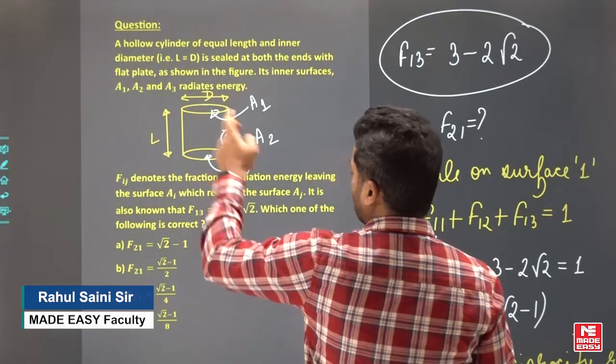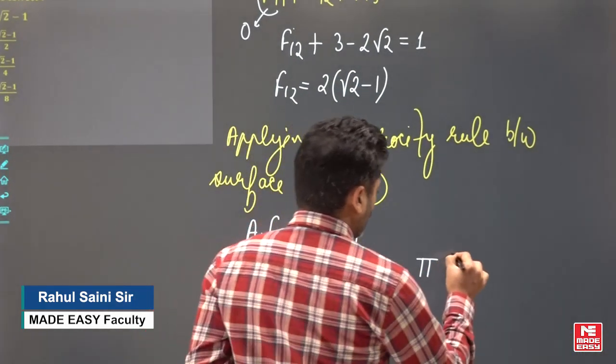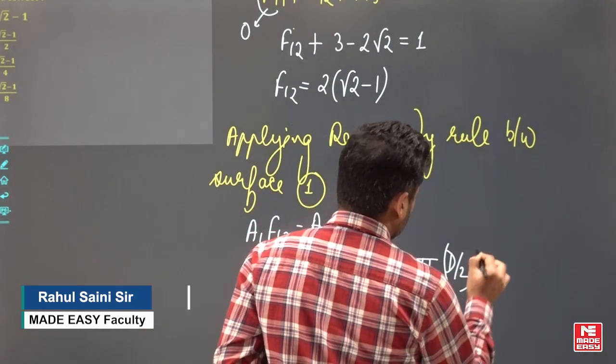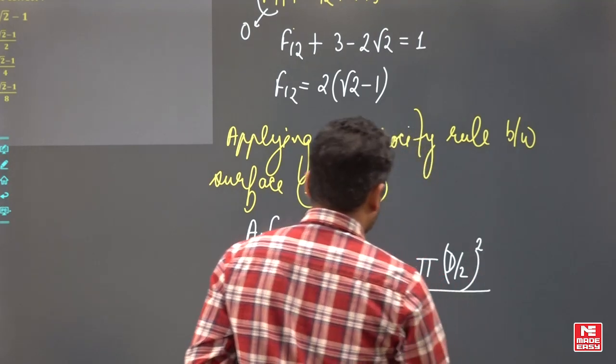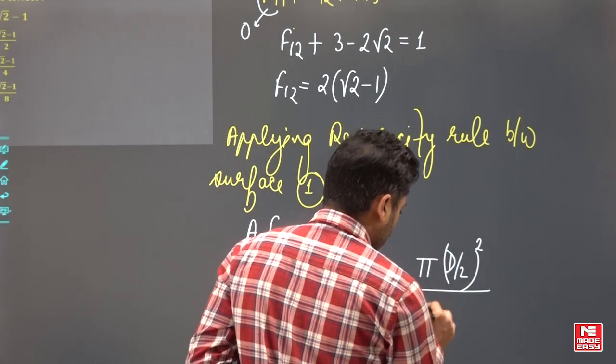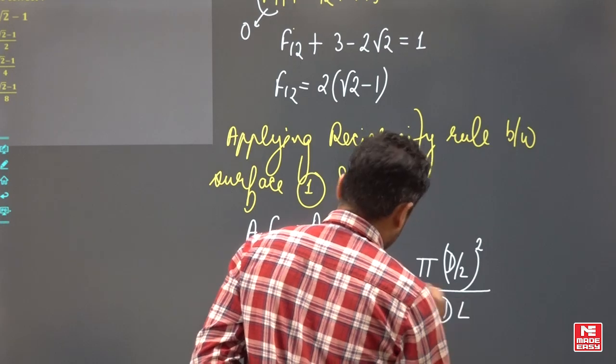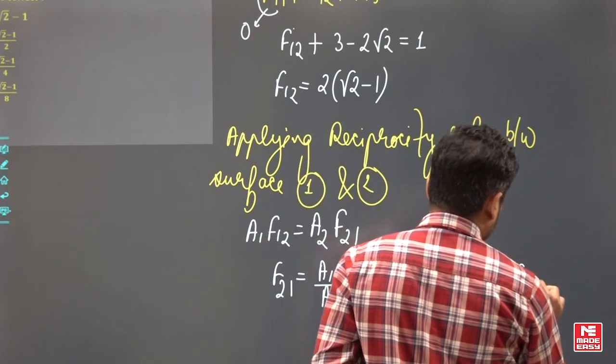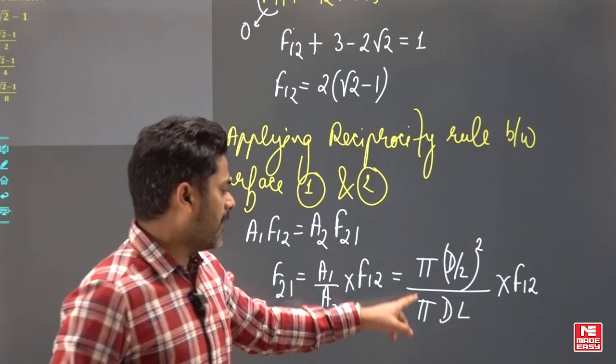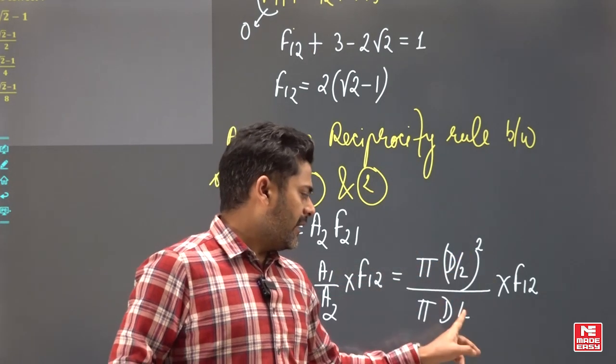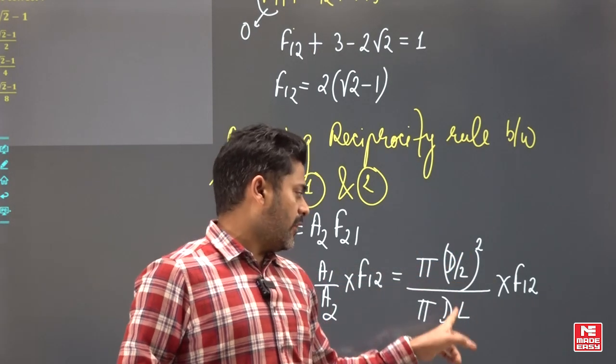So A1 is pi times D by 2 squared, divided by curved surface area of the cylinder, which is pi D times L times F12. You can see pi pi cancelled, D squared and D cancel.